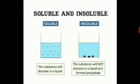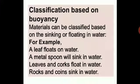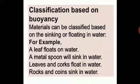Now we need to classify materials on the basis of buoyancy. What is buoyancy? Materials can be classified based on their sinking or floating in water. Buoyancy is the property of sinking or floating in water — for example, a leaf floats on water. Under this property, we learn that a metal spoon will sink in water, while leaves and corks float in water.